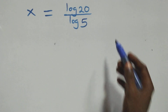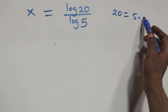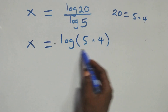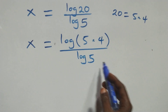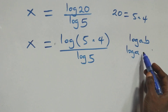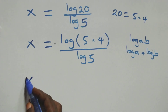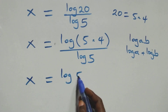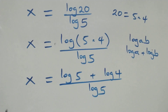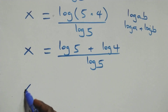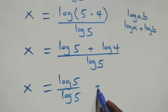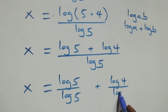Next step here: we can also write 20 as 5 times 4. So what we have becomes x equals to log(5 times 4) over log 5. This follows the rule that log(a times b) can be written as log a plus log b, which implies what we have becomes x equals to log 5 plus log 4 over log 5. We then separate this into two fractions: x equals to log 5 over log 5 plus log 4 over log 5.